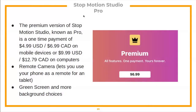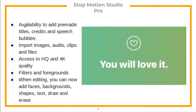Stop Motion Studio Pro is the premium version. It's a one-time payment of $4.99 USD or $6.99 CAD on mobile, or $9.99 USD or $12.79 CAD on computers. Pro features include: remote camera, letting you use your phone as a remote for a tablet; green screen and more background choices; pre-made titles, credits, and speech bubbles; and the ability to import images, audios, clips, and files.